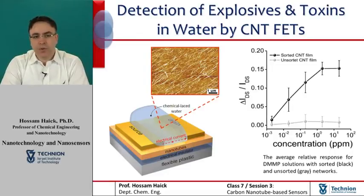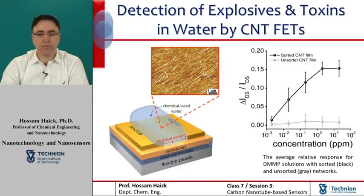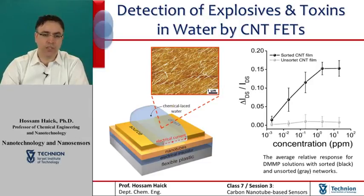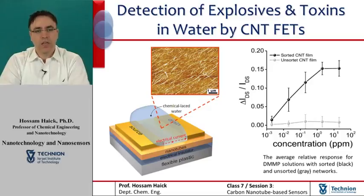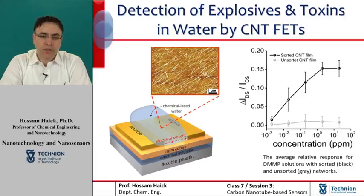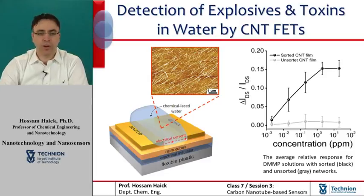Electrical sensors based on carbon nanotubes can not only be fabricated on solid substrates, but also on flexible substrates. In the presented example, I show a flexible chemical sensor made with carbon nanotubes that could help detect traces of toxins and explosives in water. This device was proven to perform as an aqueous chemical sensor with the ability to detect trace concentrations of explosive and chemical warfare agents.